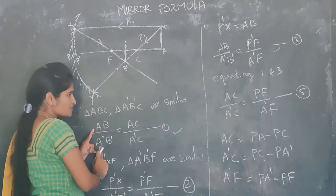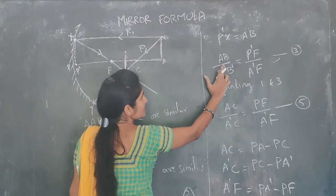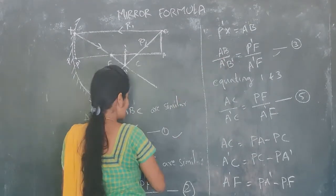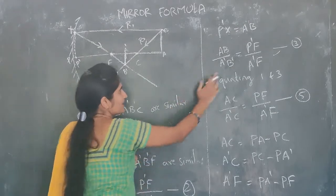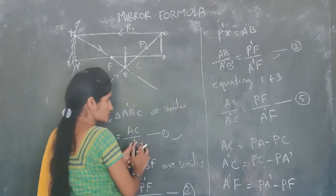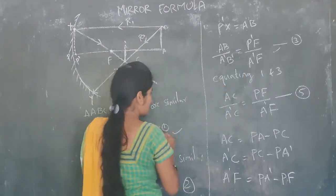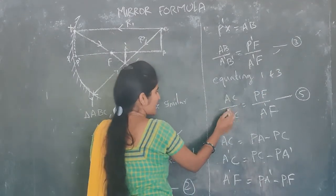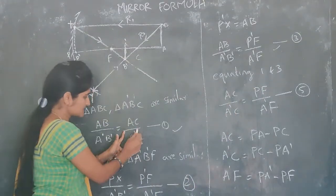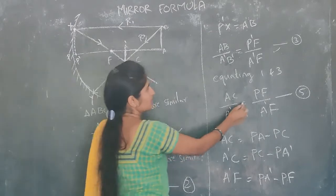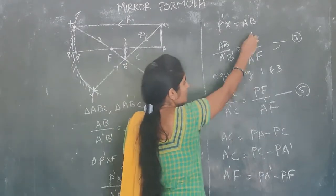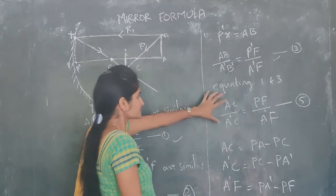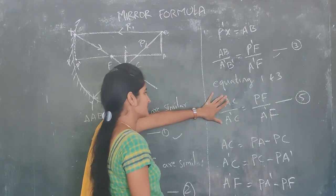Comparing equations 1 and 3: both have AB / A dash B dash on the left side, so I can equate the right-hand sides. By equating equations 1 and 3, I get: AC / A dash C = P dash F / A dash F.